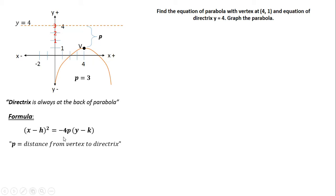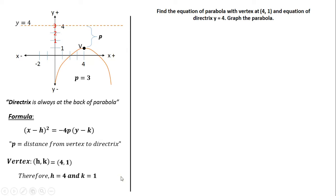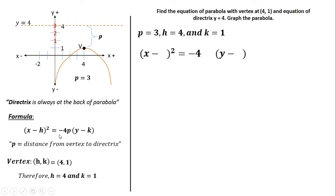For h and k: since the vertex of our parabola is (h, k), and we are given vertex (4, 1), h = 4 and k = 1. We'll use these values to solve for the equation of the parabola using our formula.